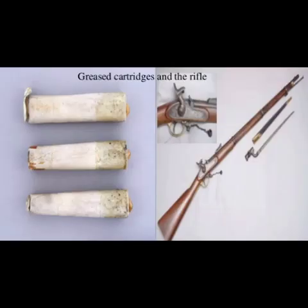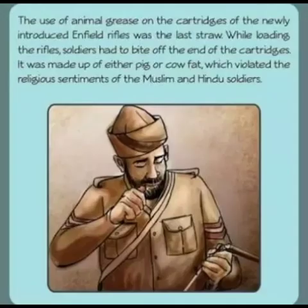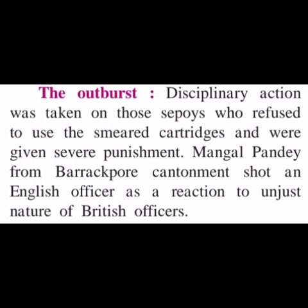In 1856, the British provided new Enfield rifles to the Indian sepoys. The sepoys were required to bite the end of the cartridges while using them. Later they came to know that these cartridges were greased with the fats of cow and pig. Due to this, the religious sentiments of both Hindu and Muslim sepoys were hurt. Indian sepoys were forced to use these rifles, and severe punishments were given to those who refused.